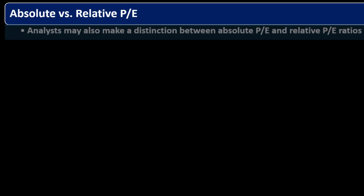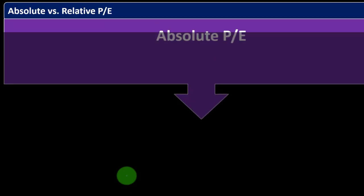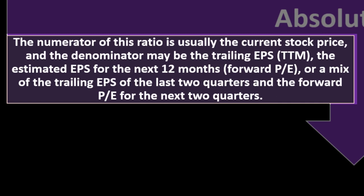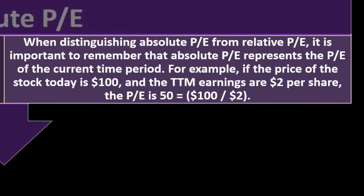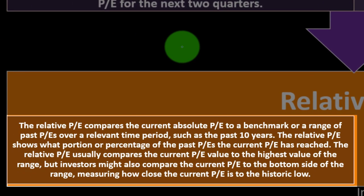Analysts may also make a distinction between absolute P/E and relative P/E. Absolute P/E uses the current stock price in the numerator, and the denominator may be trailing EPS, estimated forward EPS for the next 12 months, or a mix of the last two actual quarters and forward P/E for the next two quarters. The absolute P/E represents the P/E of the current time period — for example, if a stock is $100 today and TTM earnings are $2 per share, the P/E is 50.